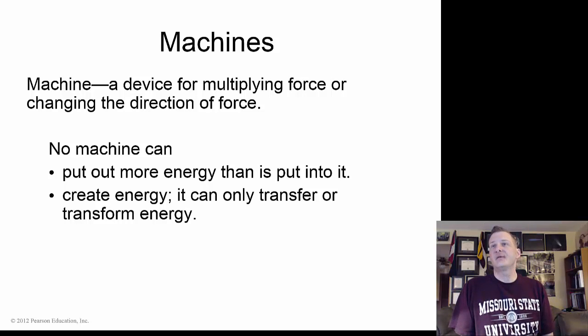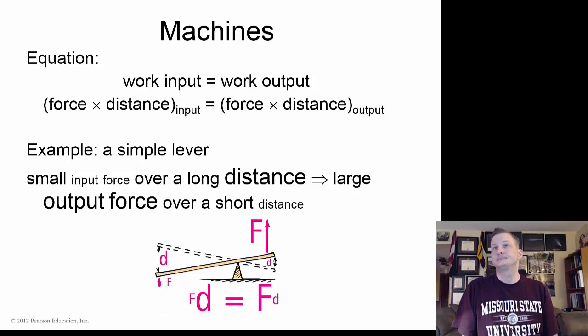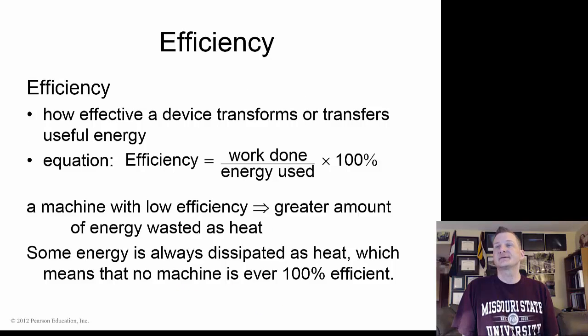Machines are a device for multiplying force or changing the direction of a force. Take note here that no machine can put out more energy than is put into it, the perpetual engine. It cannot create energy. It can only transfer or transform energy from one form to another, maybe chemical to heat.